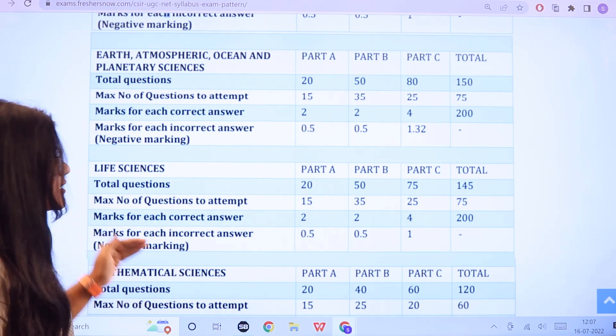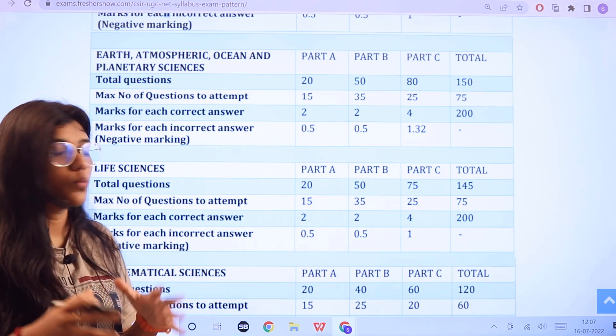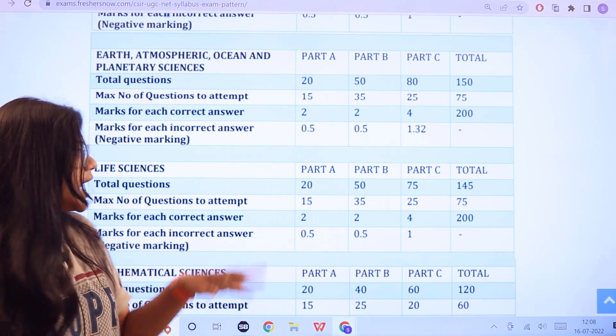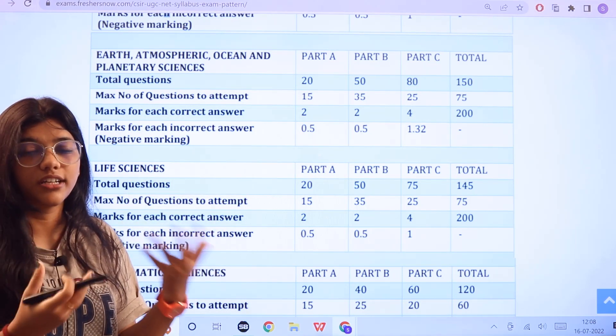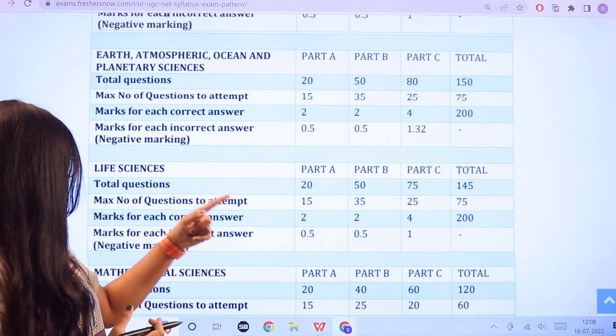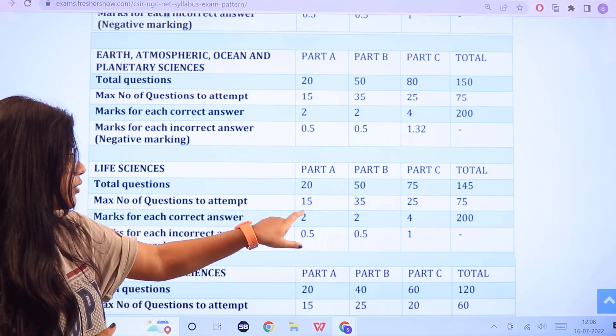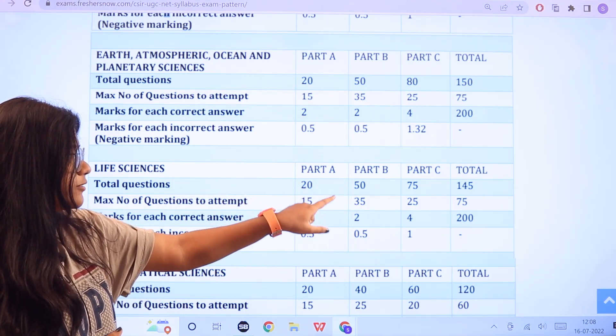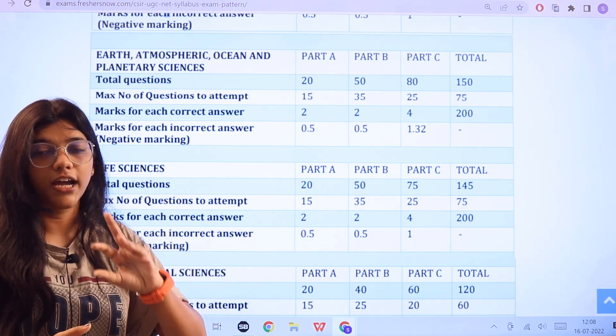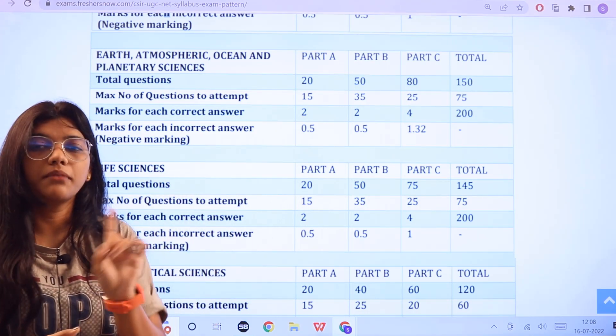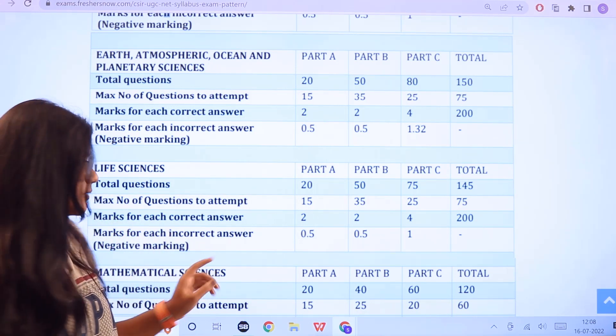Next for life sciences, you have in total 145 questions and you have to answer a maximum of 75 questions. Part A you have 20 questions, part B 50, part C you have 75. 0.5 is negative marking for part A and part B. 1 mark deducted for every wrong answer in part C.